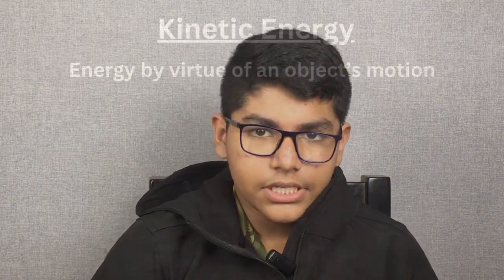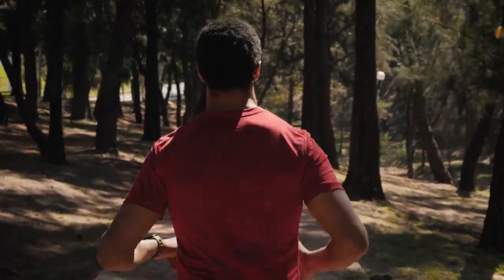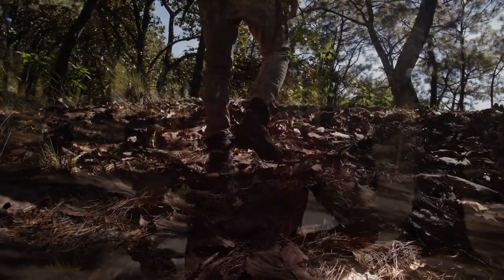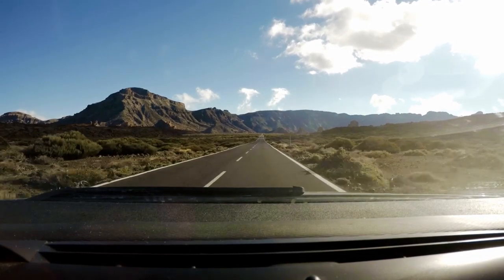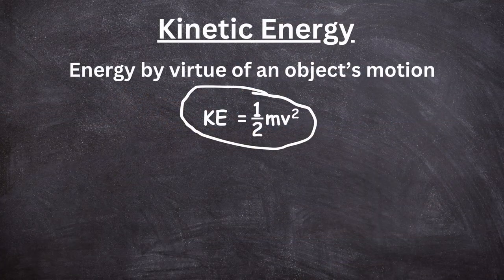So first of all, what is kinetic energy? Kinetic energy is the energy that is produced by virtue of an object's motion. For example, if I'm running, or someone is walking, or a ball is rolling, or a car is moving — all of these things have kinetic energy. Kinetic energy is equal to one half mv squared, which is mass times velocity squared.